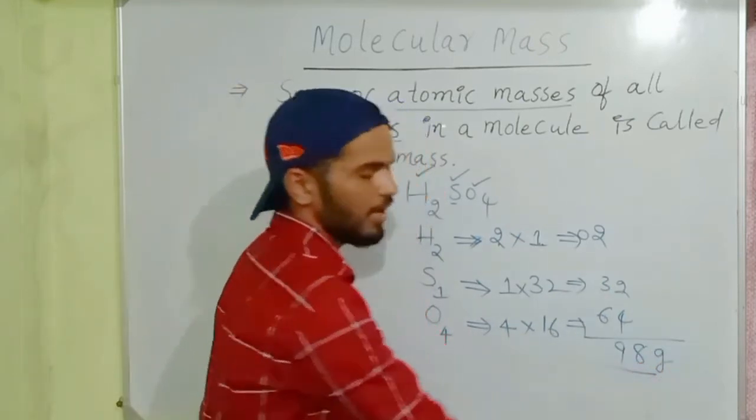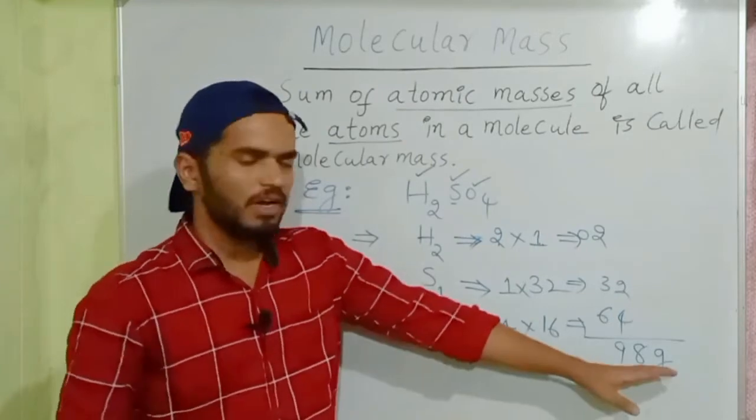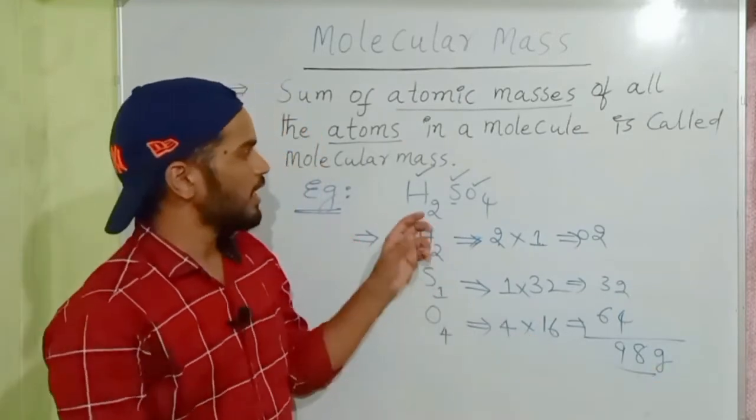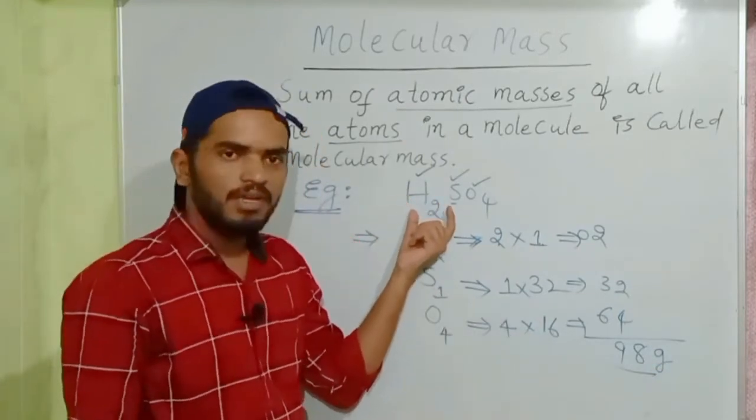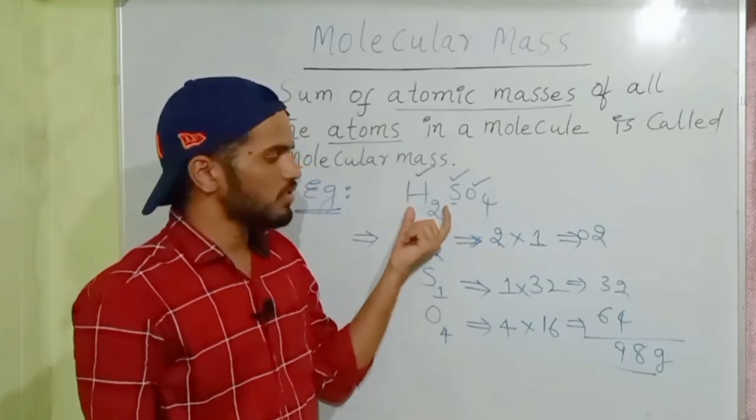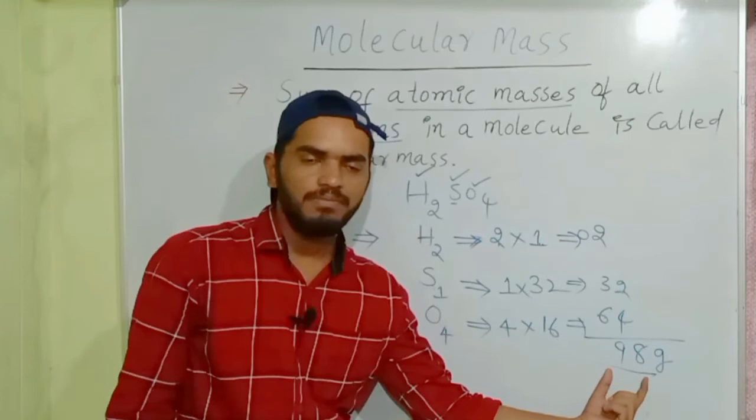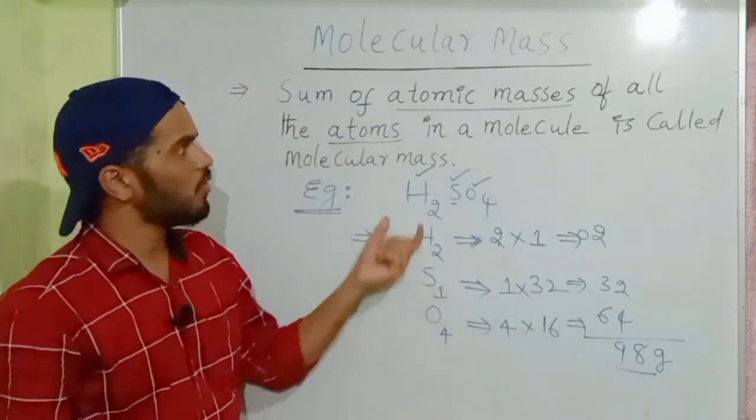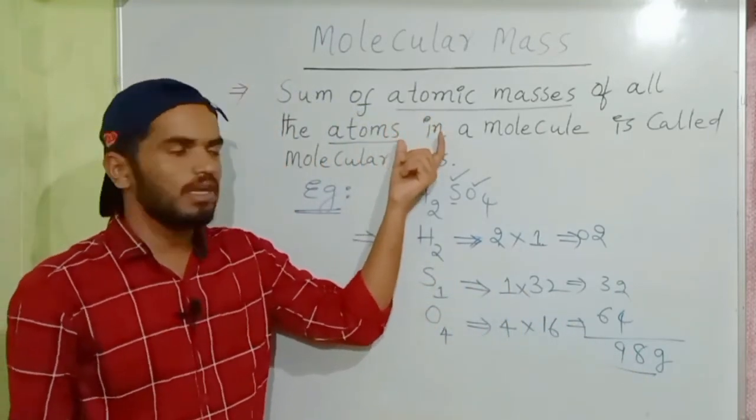Finally, we get 98 grams unified mass. The molecular mass of sulfuric acid, the molecular mass of H2SO4, is 98 grams. So this is the process you should follow while we calculate or measure the molecular mass.